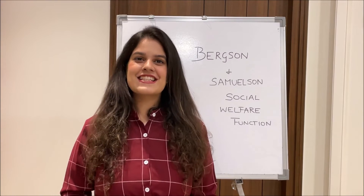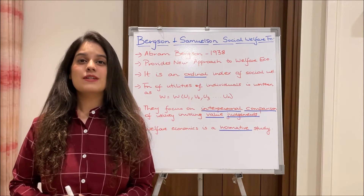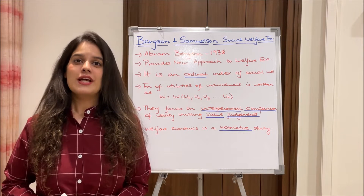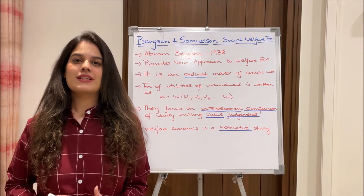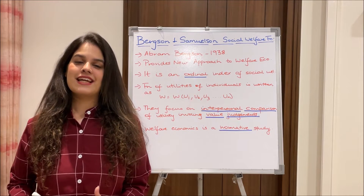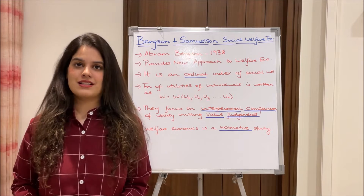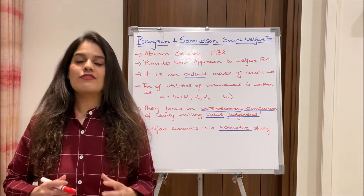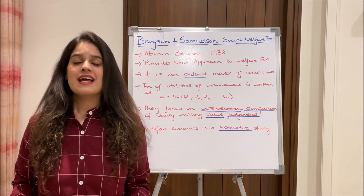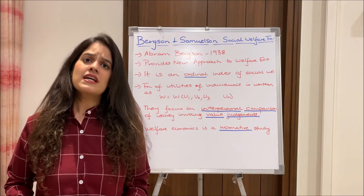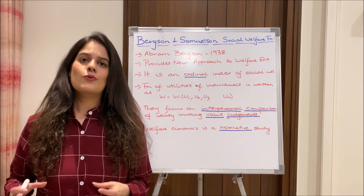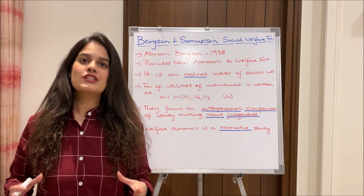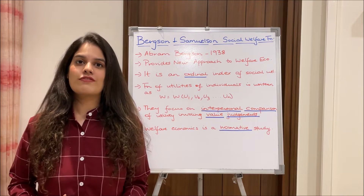Coming to exactly what is the Bergson and Samuelson social welfare function — it was propounded in 1938 by Abram Bergson in his article. This theory provided a new approach to welfare economics. In fact, many welfare economists failed to provide a satisfactory solution to the problem of maximization of social welfare, and that is when Bergson and Samuelson stepped in.